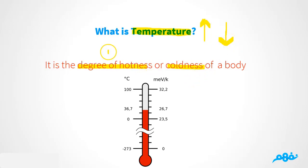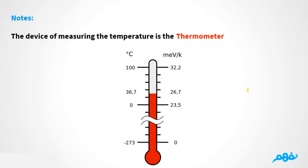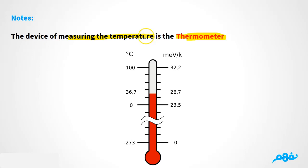So finally, what is temperature? It is the degree of hotness or coldness of a body. And this is a thermometer — the device we use to measure temperature. What device do we use to measure temperature? We use a thermometer.